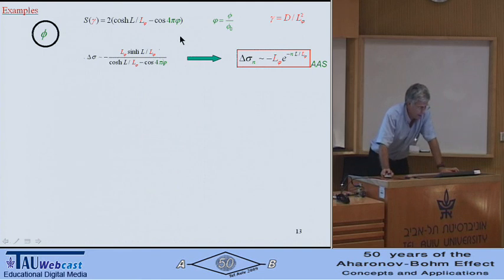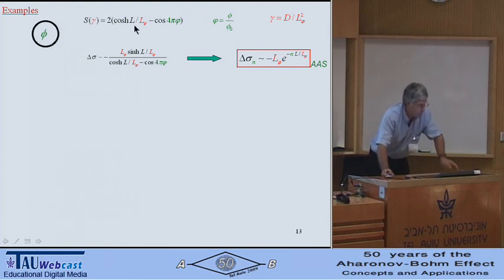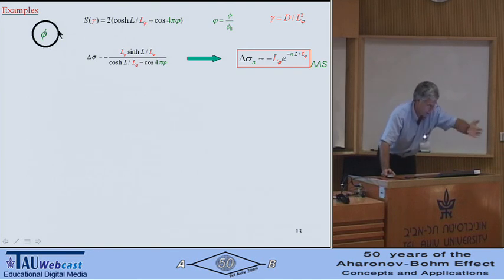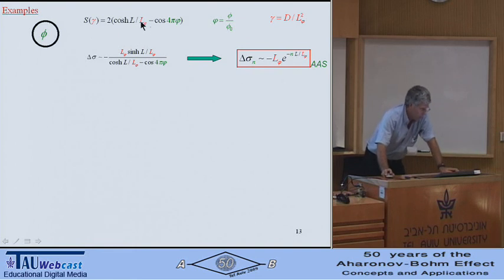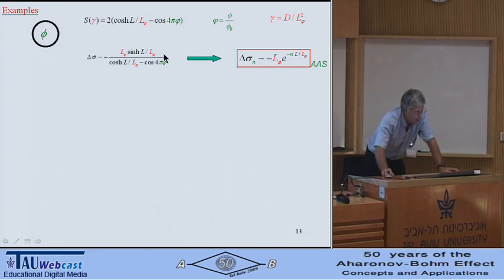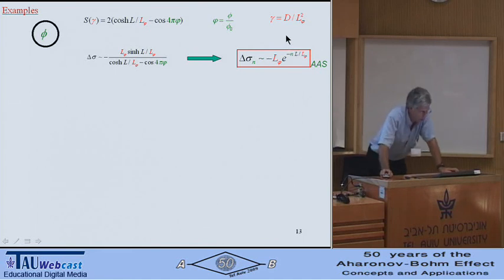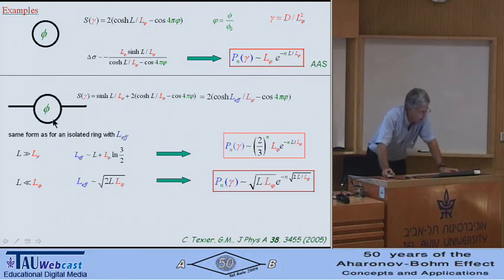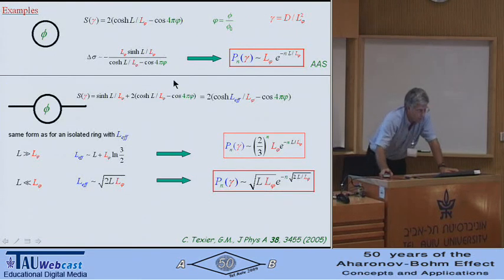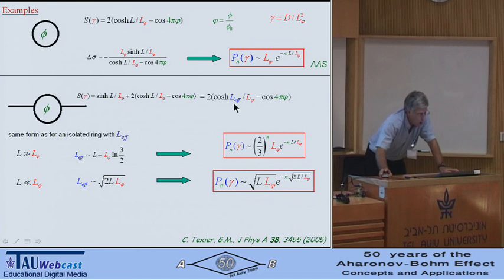Starting with the isolated ring: the spectral determinant is a one-by-one matrix depending on the length, the phase coherence length, and the dimensionless flux. From the logarithmic derivative, we get the weak localization correction and its harmonics — the Altshuler-Aronov-Spivak oscillations. Now the first exercise is to connect the ring to arms. The structure is still simple, with the same form as for the isolated ring except that here you have an effective length depending on the bare length and on L_phi.